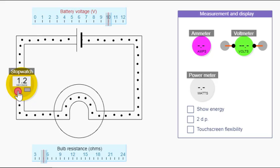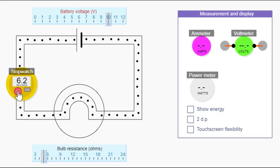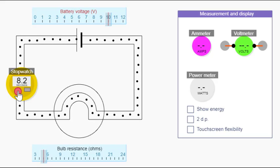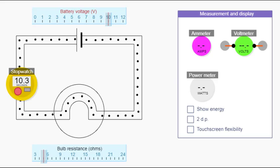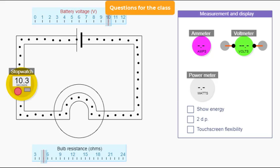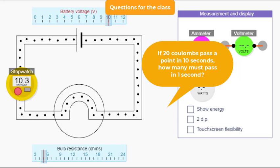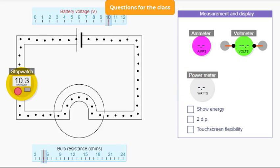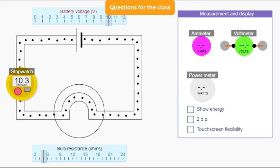One, two, three, four, five, six, seven, eight, nine, ten, eleven, twelve, thirteen, fourteen, fifteen, sixteen, seventeen, eighteen, nineteen, twenty. So twenty coulombs in ten seconds. If twenty coulombs pass a point in ten seconds, how many must pass in one second? It must be twenty divided by ten equals two coulombs.